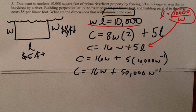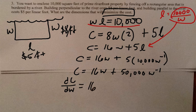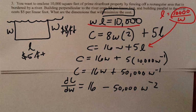Now I'm ready to take the derivative. The derivative of cost with respect to w equals 16 minus 50,000w to the negative 2. Set this equal to zero and solve for w — I'll do that on the next screen.